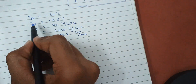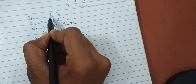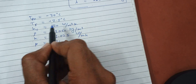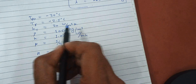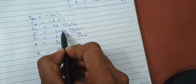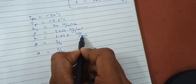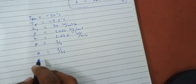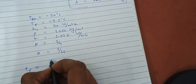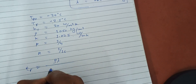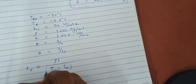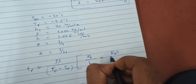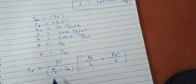Listing all values: T∞ = −30°C, Tf = −2.5°C, h = 20 W/m²·K, ρ = 1050 kg/m³, k = 1.025 W/m·K, P = 1/4, R = 1/16. Now substituting into Plank's equation: tf = (ρ·λ / (Tf − T∞)) × (P·a/h + R·a²/k).